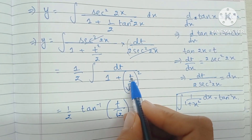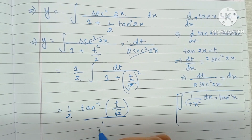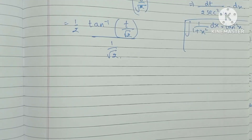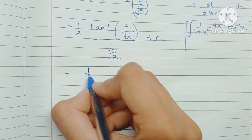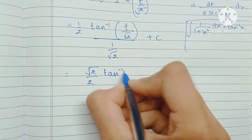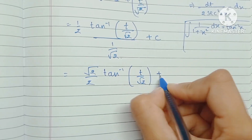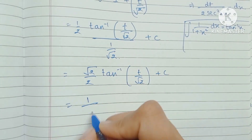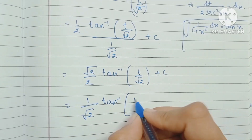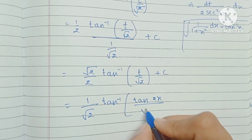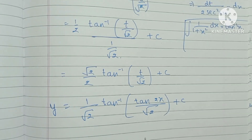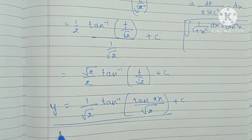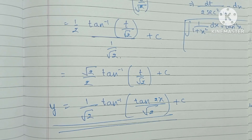Taking the 1/√2 to the numerator and adding an arbitrary constant, this becomes (√2/2)·tan⁻¹(t/√2) plus c, which I can write as (1/√2)·tan⁻¹(t/√2) plus c. Now replacing t with tan2x, the final answer is y equals (1/√2)·tan⁻¹(tan2x/√2) plus c. There is no differential term left and nothing left to integrate — this is our final answer. This was a long and tricky one but we got there.